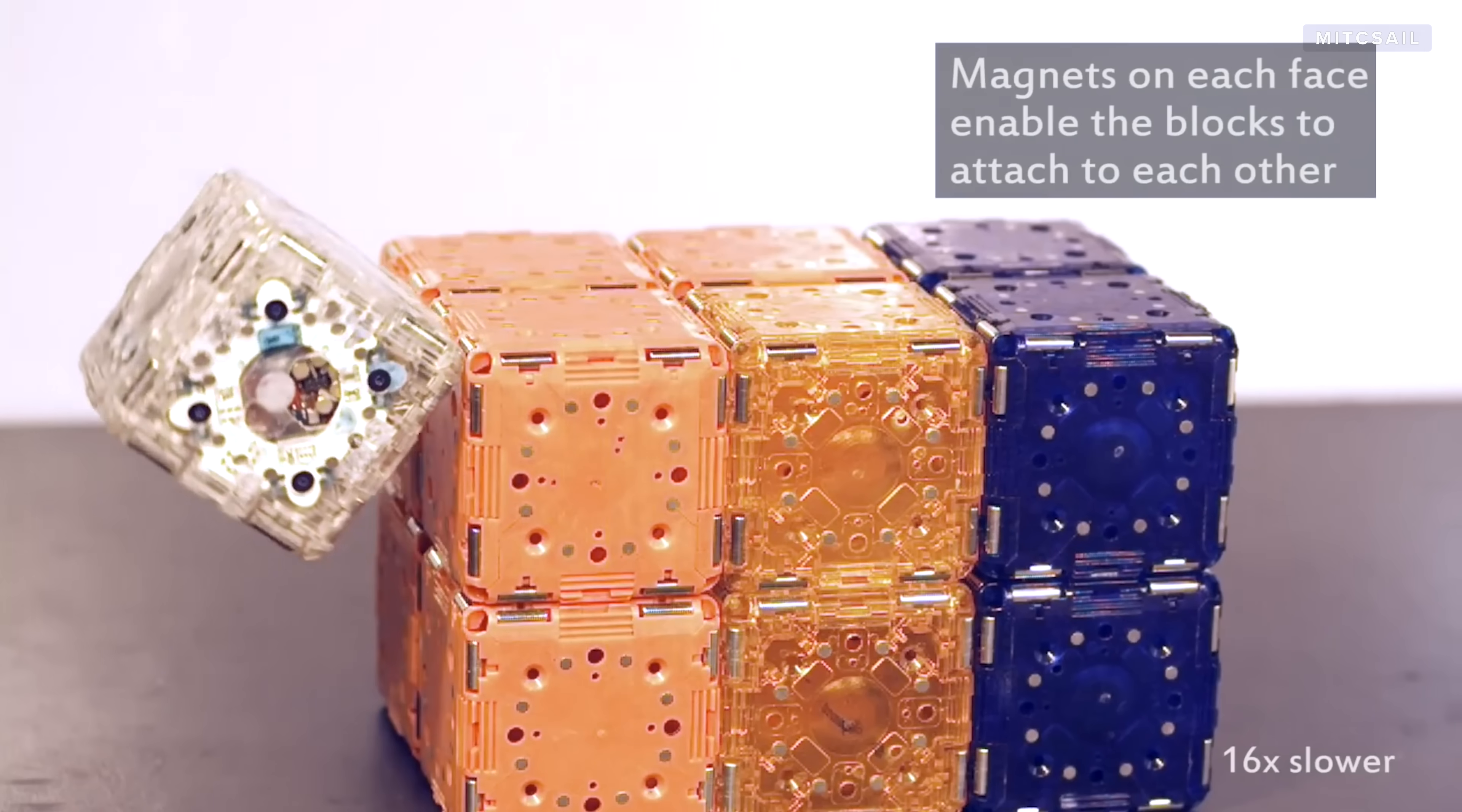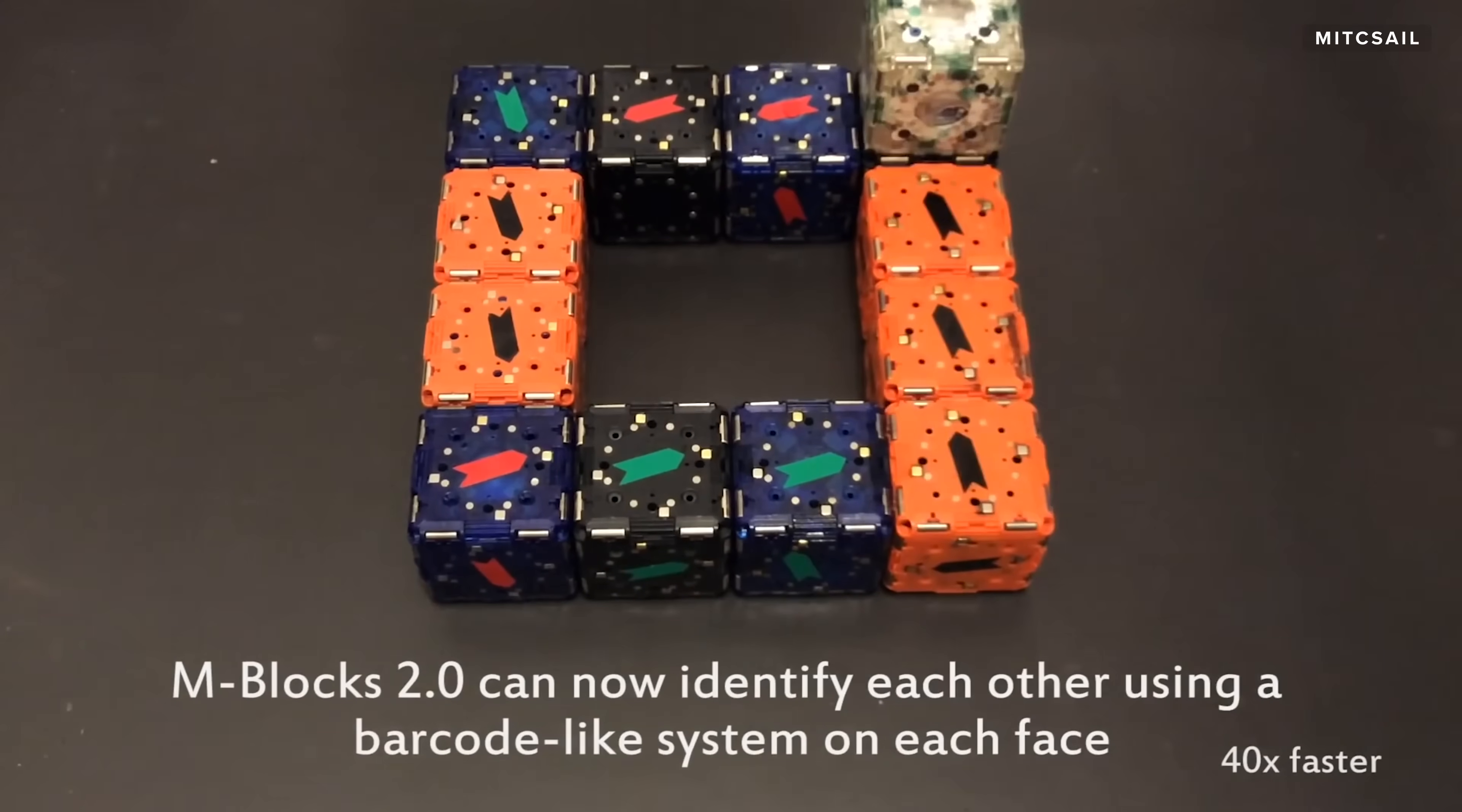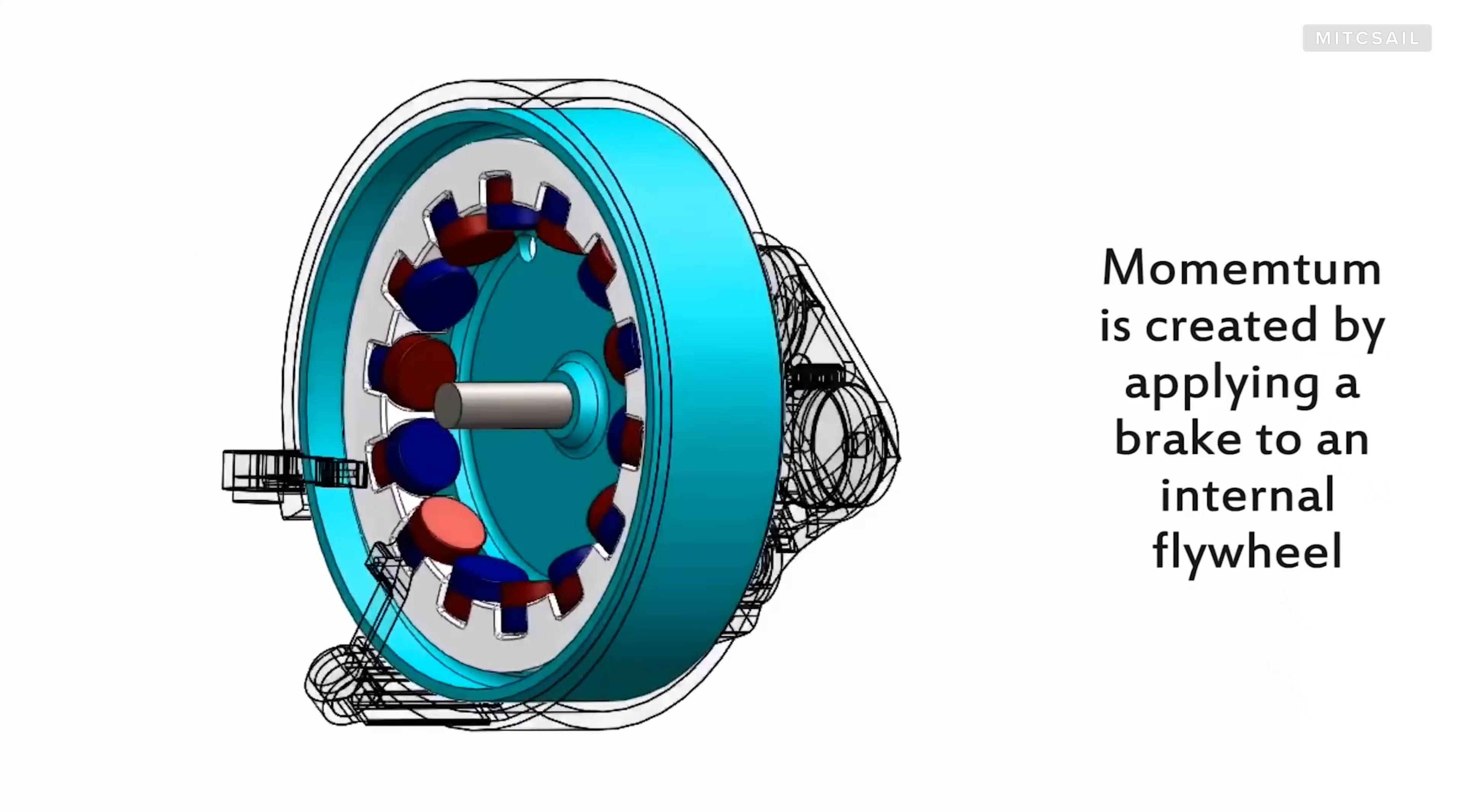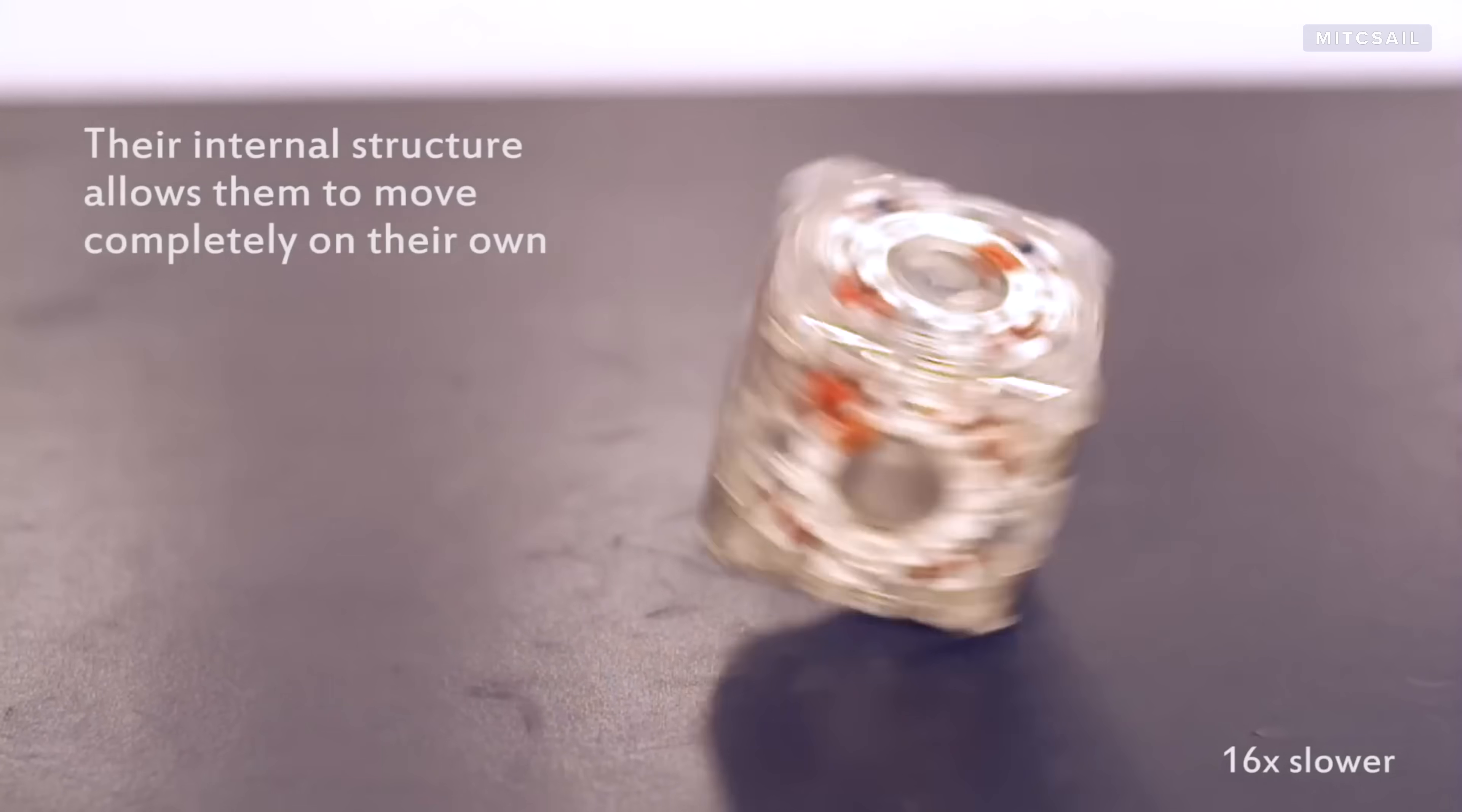These Roombots aren't the only modular robots currently in development. MIT's MBLOX 2.0 connect to each other using magnets and use a barcode-type system to identify one another. Inside the blocks is a flywheel capable of 20,000 rotations per minute. When a brake is applied to the flywheel, it creates the momentum that moves the blocks.